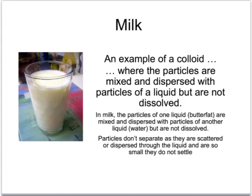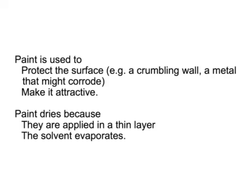Similarly, paint consists of colloids — tiny particles of substances which are dispersed throughout the liquid and don't separate out. Paint is used for all sorts of things, but generally it is to protect a surface. For example, if you have a crumbling wall or a metal that might corrode or rust if left outside, we use paint to protect it. We also paint things to make them look more attractive, for example our front doors or bedroom walls. Paint is a liquid but it dries because it is applied in a very thin layer and then the solvent evaporates, leaving behind the paint on the painted surface.